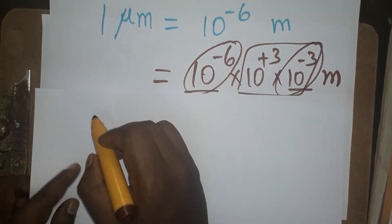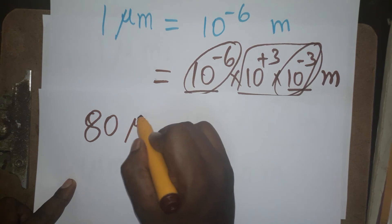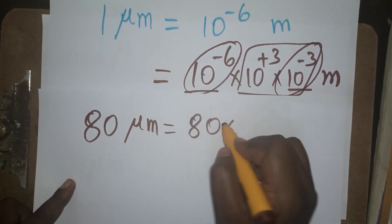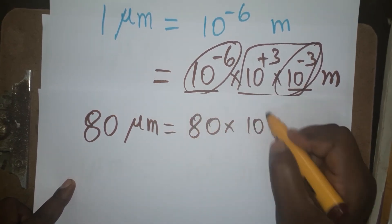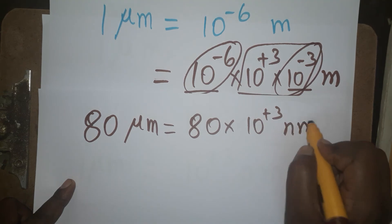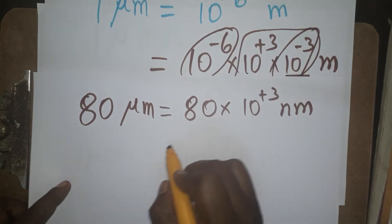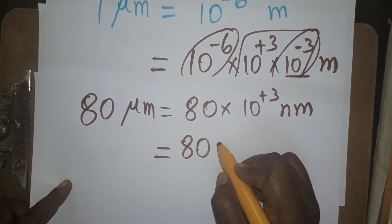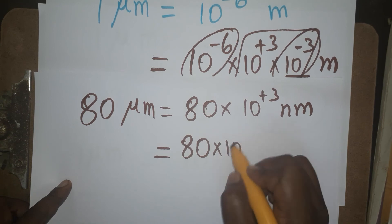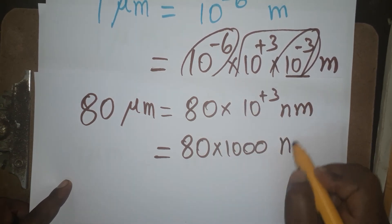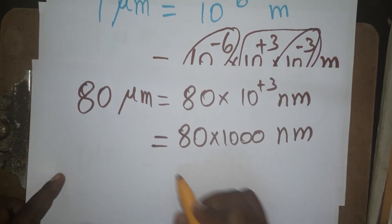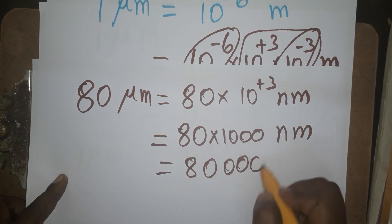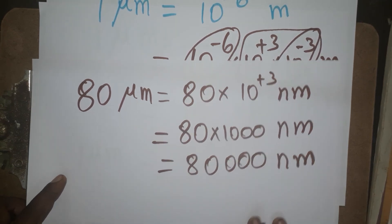Now for the example: 80 micrometers equals 80 into 10 power plus 3 nanometers. Since 10 power plus 3 equals 1000, the answer is 80 into 1000, which is 80,000 nanometers.